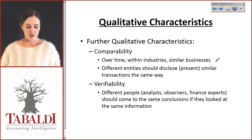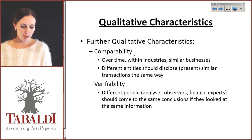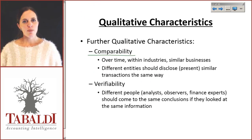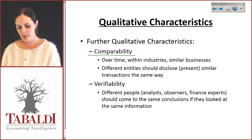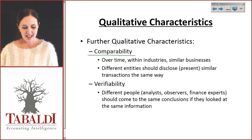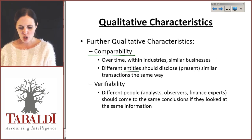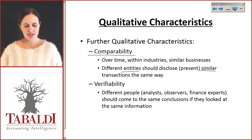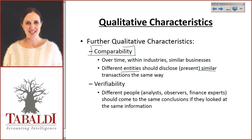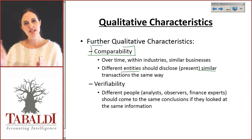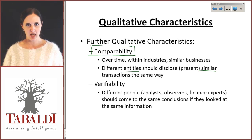Further qualitative characteristics: comparability — make sure that you can compare the information over time, within industries, among similar businesses. Different entities should disclose similar transactions in the same way. The idea of comparability is very important because we can identify trends over time.